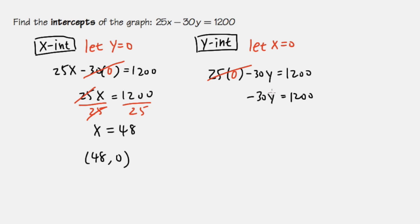And this is negative 30 times y. So to get rid of the negative 30, we will have to divide by negative 30, and we do that on both sides.